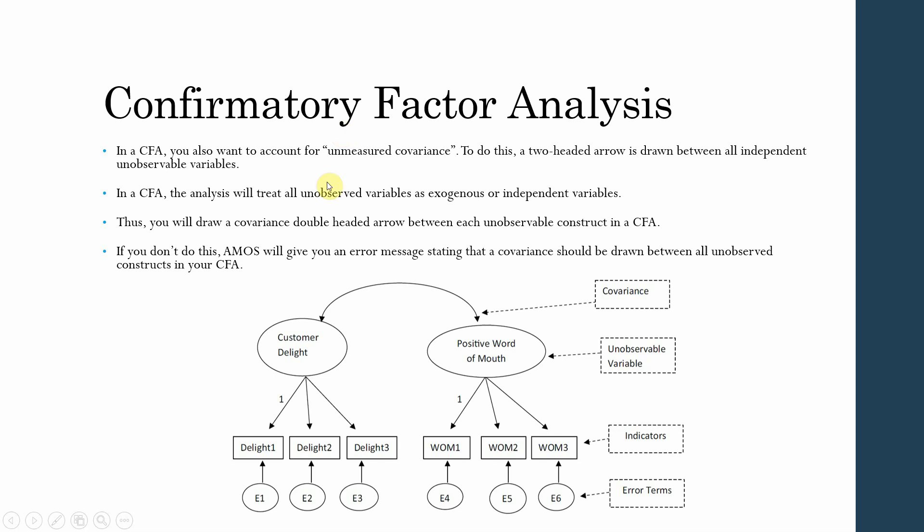If you don't do this, AMOS will give you an error message. When you are making or developing your measurement model with more than one construct or factor, you need to co-vary the unobserved variables with the two-headed arrow.